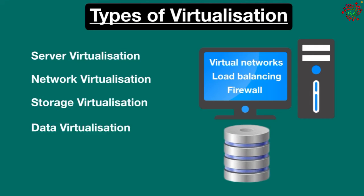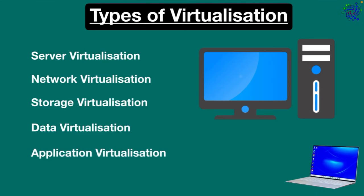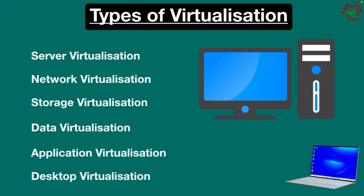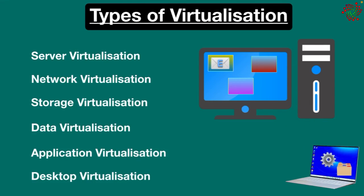Data virtualization consolidates all of your data into one source and can be accessed from various sources with different formats in multiple locations. With application virtualization, you can access applications from a device other than the one on which the application is installed. Finally, desktop virtualization separates the desktop environment from the physical device, allowing you to access all your personal files and applications on any computer from anywhere.